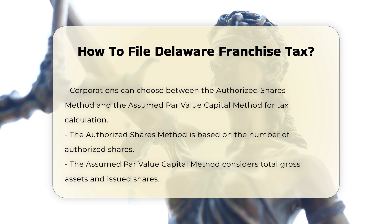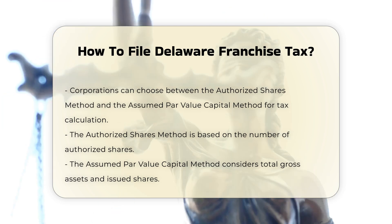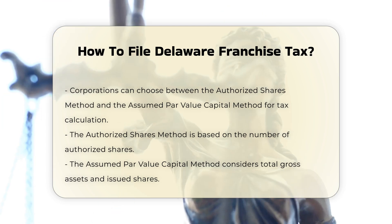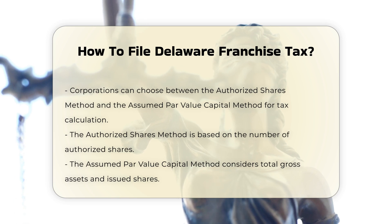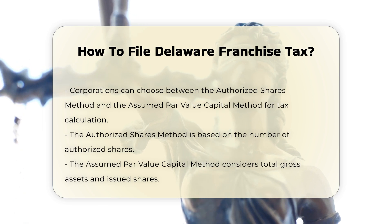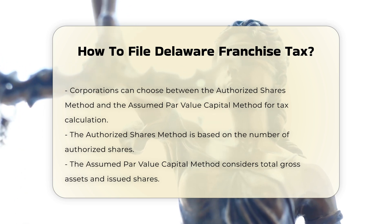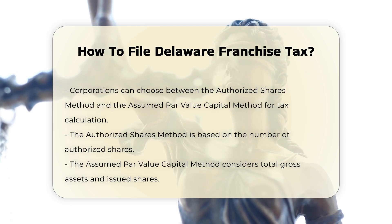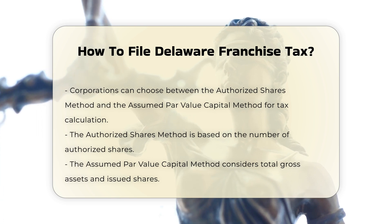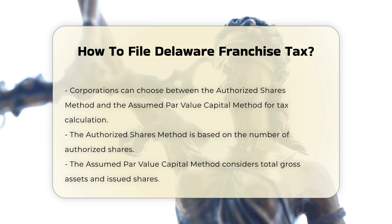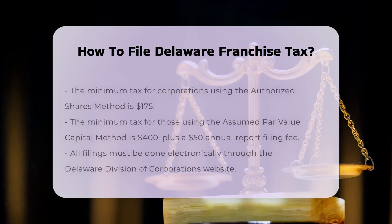Minimum Tax Amounts. The minimum tax for corporations using the Authorized Shares Method is $175, and for those using the Assumed Par Value Capital Method, it is $400. There is also a $50 annual report filing fee.